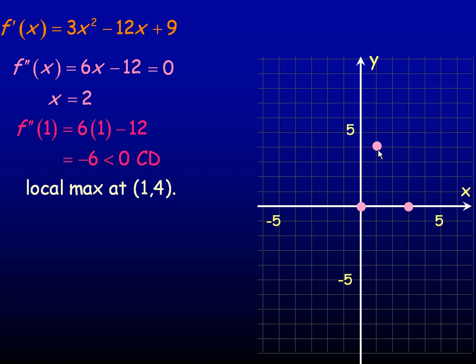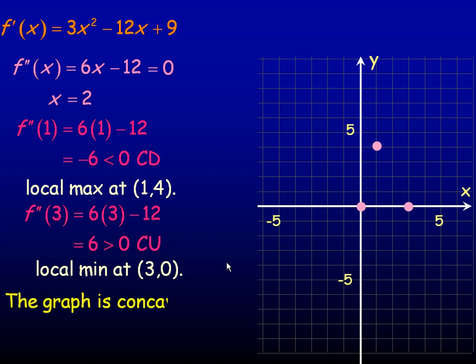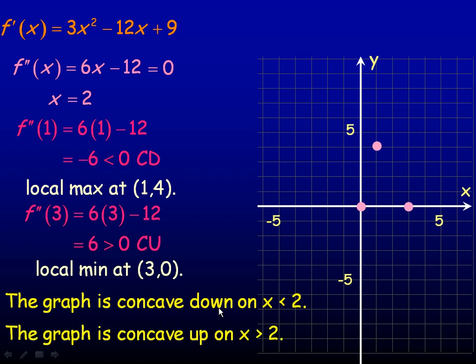Now I'm going to check at 3, that's my other critical point. So in the second derivative, the second derivative at 3, 6 times 3 minus 12, works out to positive 6. And that's positive, that's greater than 0, so the graph is concave up here, so this has to be a local minimum point. So a local minimum point at (3, 0). So the graph is concave down. Now we checked the left of 2, it's concave down there, and it's concave up to the right of 2. Remember when we checked at 3, that was a number bigger than 2. So it's concave down on x is less than 2, and concave up where x is greater than 2.